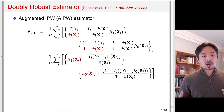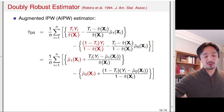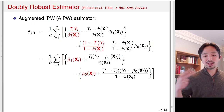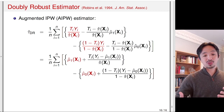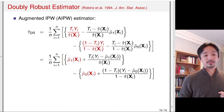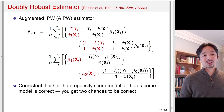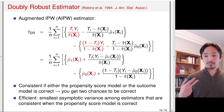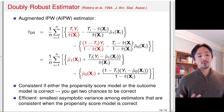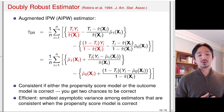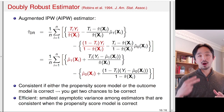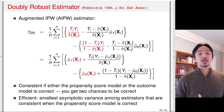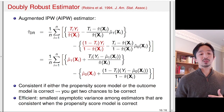This addresses the dilemma of whether to use a regression modeling approach or a propensity score modeling approach, because with either approach alone, an incorrectly specified model gives the wrong answer. The doubly robust estimator allows you to estimate the average treatment effect consistently as long as one of the two models is correct — you get two chances to be correct. It has also been shown that, among estimators that are consistent when the propensity score model is correct, this estimator achieves the smallest asymptotic variance, making it as efficient as possible while retaining the attractive double robustness property.